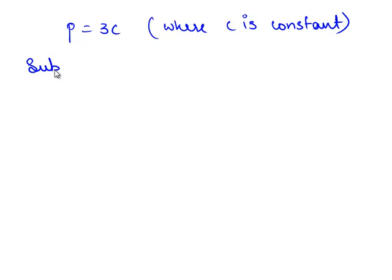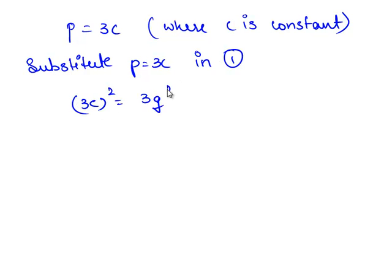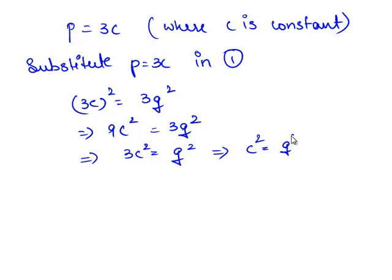Since 3 is a factor of p, p can be written as 3c, where c is some constant. So, now we substitute the value of p in equation 1. This gives 3c whole square is equal to 3q square. It is 9c square is equal to 3q square, which implies 3c square is equal to q square. This implies c square is equal to q square by 3.